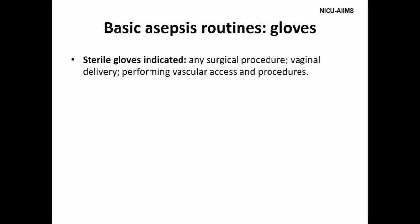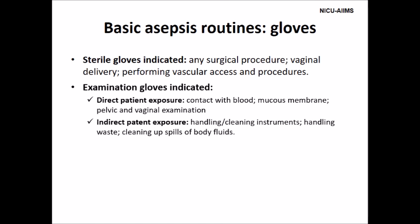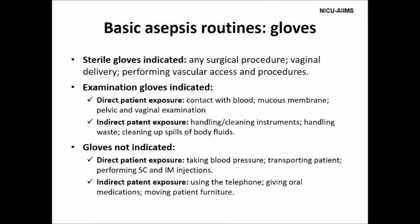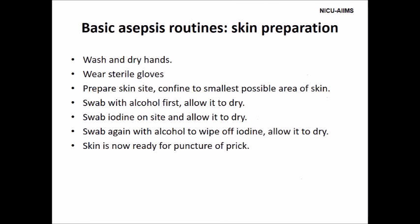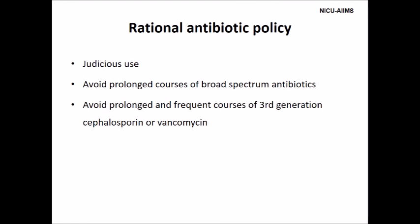Basic asepsis routines — use of gloves: always use sterile gloves for invasive procedures like sampling, starting intravenous lines, endotracheal intubation, and giving intravenous injections. Throw used gloves in blue bag. Adequate numbers of sterile and clean gloves should be available in the unit. Use full-sleeve gown and mask for all invasive procedures like lumbar puncture and blood transfusion. Skin preparation: wash and dry hands, wear sterile gloves, prepare skin site confined to smallest possible area, swab with alcohol first and allow to dry, swab iodine on site and allow to dry, then swab again with alcohol to wipe off iodine and allow to dry. Skin is now ready for puncture.